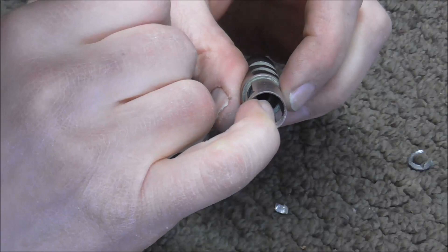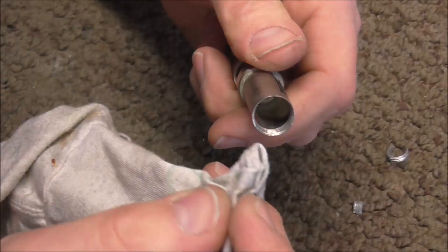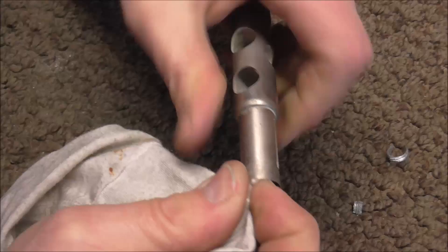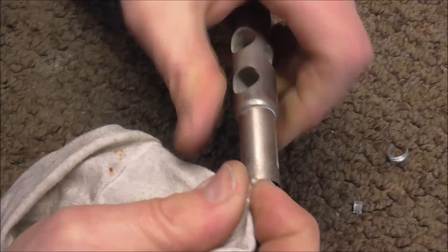Then after that you'll just take a poker and clean up the inside of the threadings. Clean up the inside with a rag and then you're done. Thank you for watching. I hope this video has been helpful and please subscribe for more band instrument repair videos.